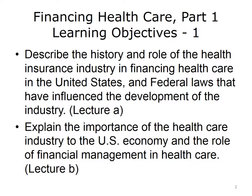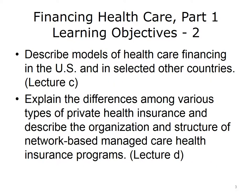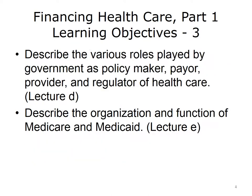The learning objectives for Financing Healthcare Part 1 are to: describe the history and role of the health insurance industry in financing healthcare in the United States, including federal laws that have influenced the development of the industry; explain the importance of the healthcare industry to the U.S. economy and the role of financial management in healthcare; describe the models of healthcare financing found in the U.S. and in selected other countries; explain the differences among various types of private health insurance; describe the organization and structure of network-based managed care health insurance programs; describe the various roles played by government as policymaker, payer, provider, and regulator of healthcare; and describe the organization and function of Medicare and Medicaid.